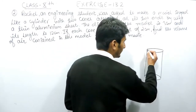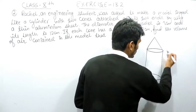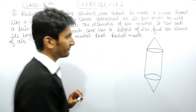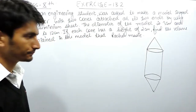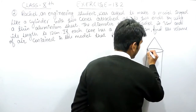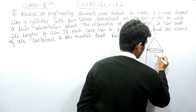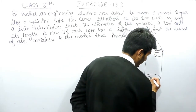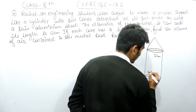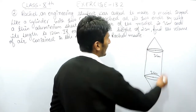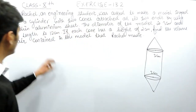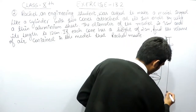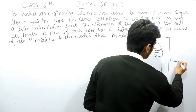This is a cylinder and two cones are attached to both its ends. Now the diameter of this figure is given as 3 cm. So if the diameter here is 3 cm, it will be the same here and here also — the diameter will be 3 cm. And the complete length of this model is given as 12 cm.